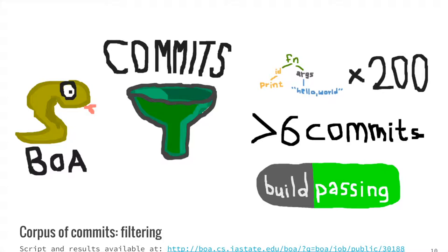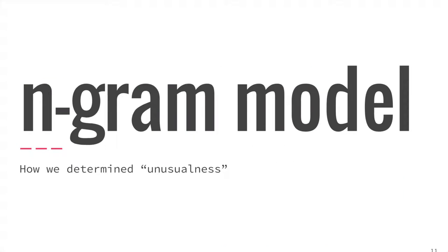Now, with commits and associated build statuses, we can rate the unusualness of their messages. For this, we trained n-gram language models. N-gram models are commonly used in natural language processing to measure the frequency, regularity, and probability of text. In our case, we can measure the unusualness of each commit message.